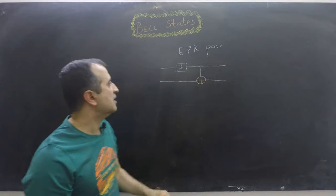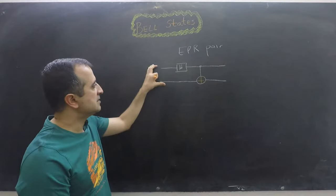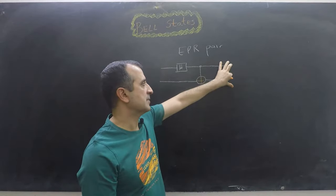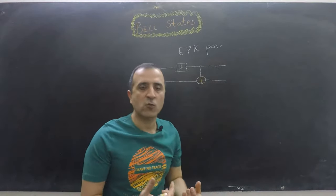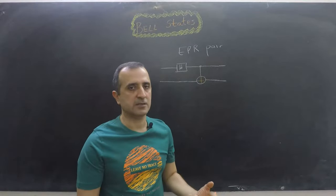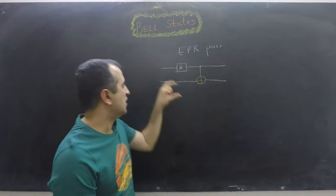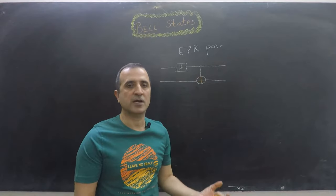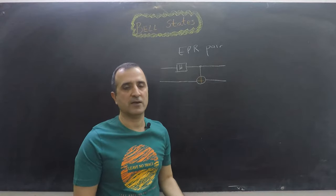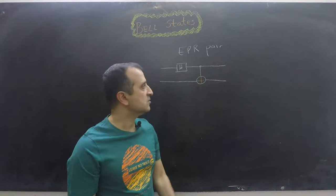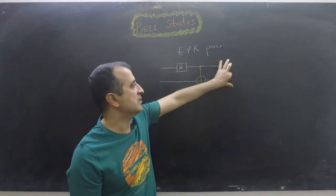We start with pure states and at the end we have entangled qubits. As we can see, there could be four different possibilities for our input, which are |00⟩, |01⟩, |10⟩, and |11⟩. So there are four different Bell states.